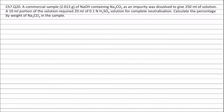Question 20. A commercial sample of 2.013 g of NaOH containing Na₂CO₃ as an impurity was dissolved to give 250 ml of solution. A 10 ml portion of the solution required 20 ml of 0.1 N H₂SO₄ solution for complete neutralization. Calculate the percentage by weight of Na₂CO₃ in the sample.